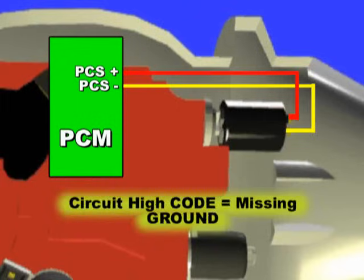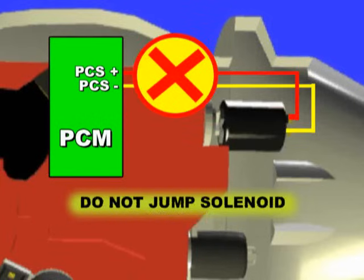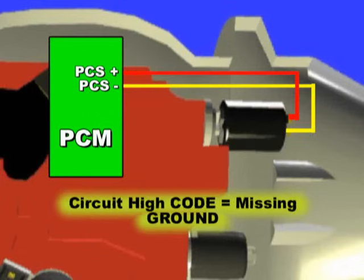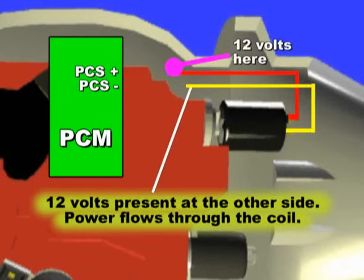To test the PCS solenoid, do not apply power and ground. Simply do the following: disconnect the transmission main connector, apply power or 12 volts to one of the two wires, then using a multimeter, probe at the other wire.